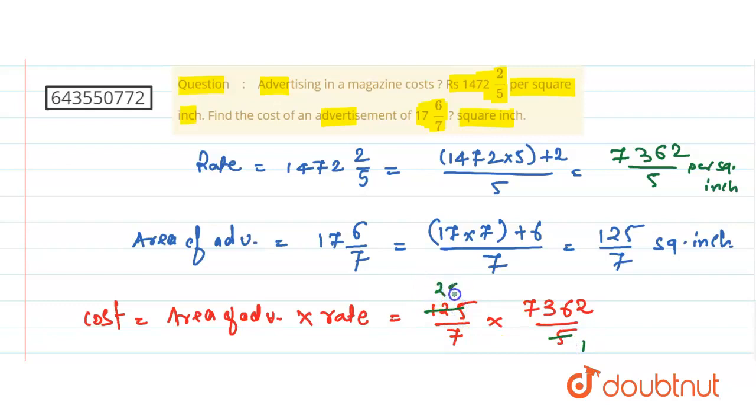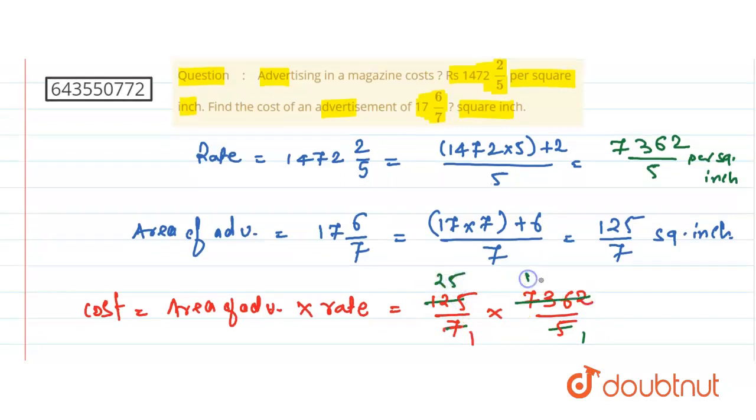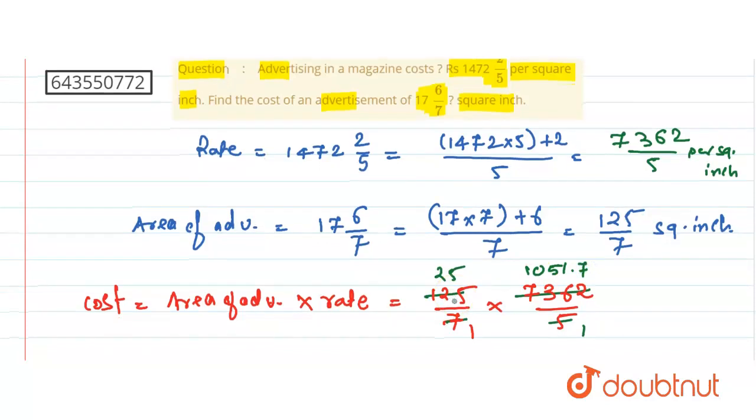See here, 5 times 5 is 25, it's 125. 7 times 7 is 49. If we take the multiplication of 25 and 1051...